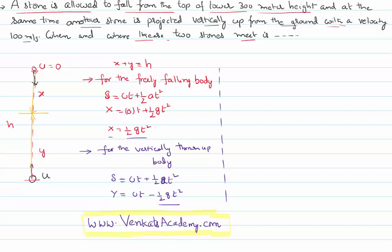I will substitute that value of x in this equation, that implies y is ut minus half gt square, that's nothing but x. Get that x to this side, y plus x equal to ut, but you know y plus x is the total height of the tower, h equals ut.